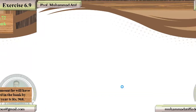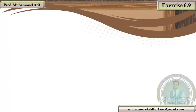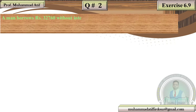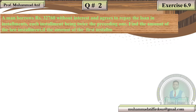Next, we start question number 2. A man borrows Rs. 32,760 without interest and agrees to pay the loan in installments, each installment being twice the preceding one. Find the amount of the last installment if the amount of the first installment is Rs. 60. The man has borrowed 32,760 and will return it to the bank.